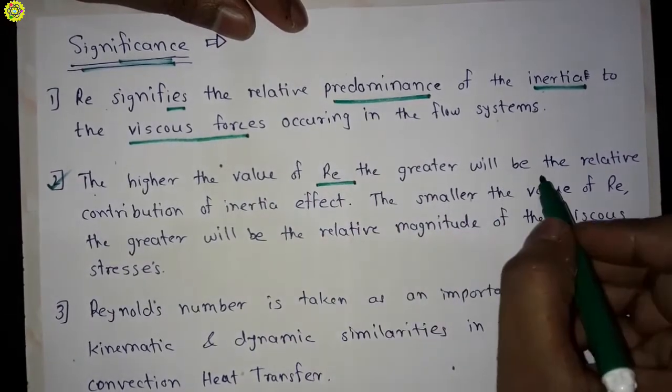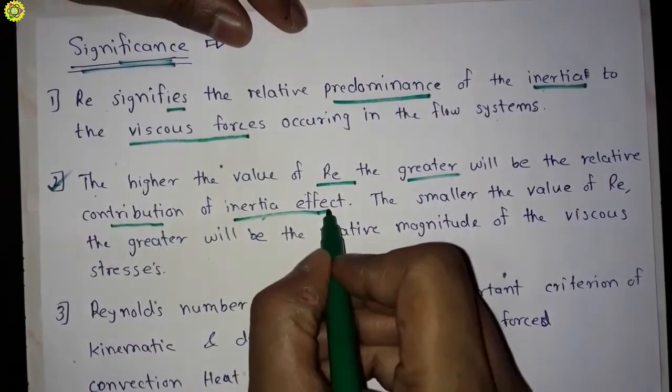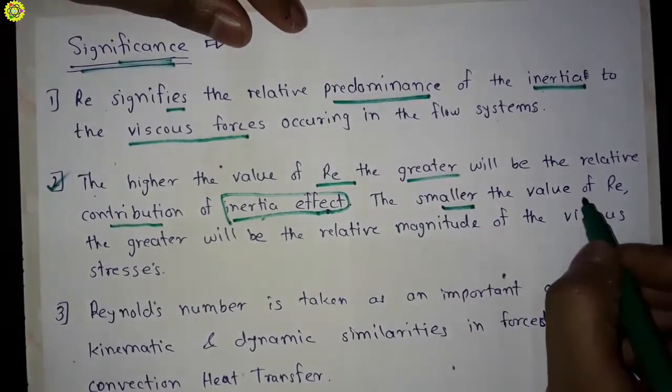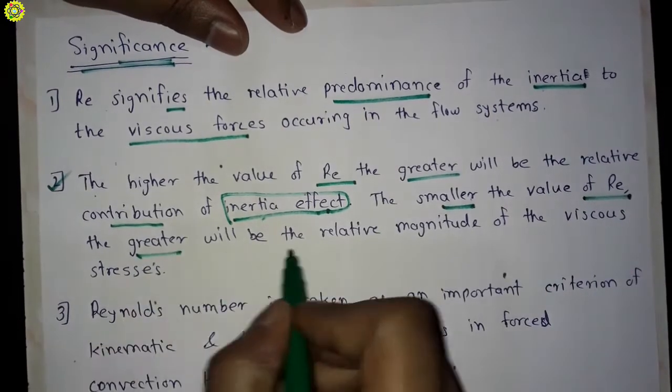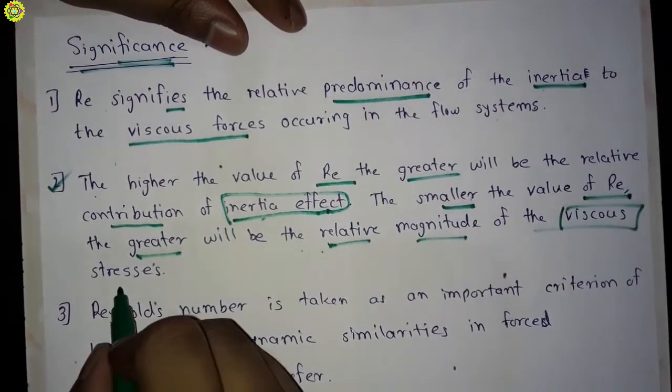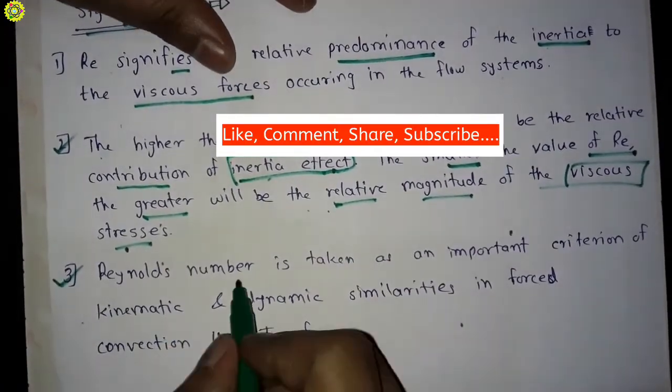Further, the smaller the value of Reynolds number, the greater will be the relative magnitude of the viscous stresses. Further, third is Reynolds number is taken as an important criterion of kinematic and dynamic similarities in forced convection heat transfer.